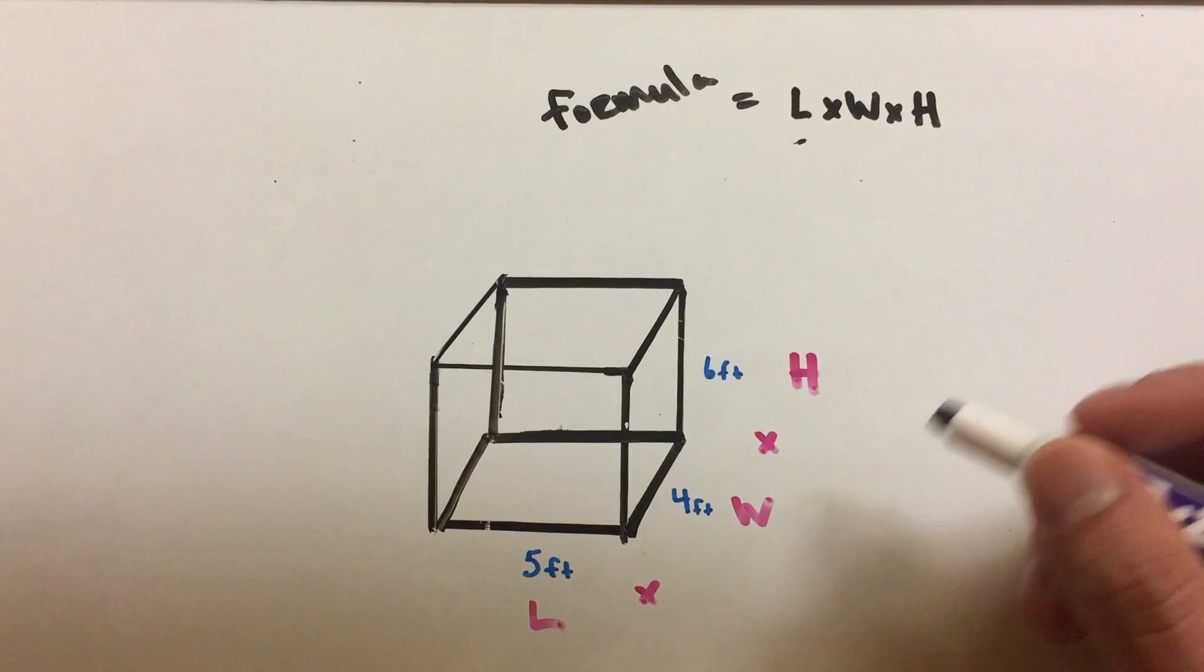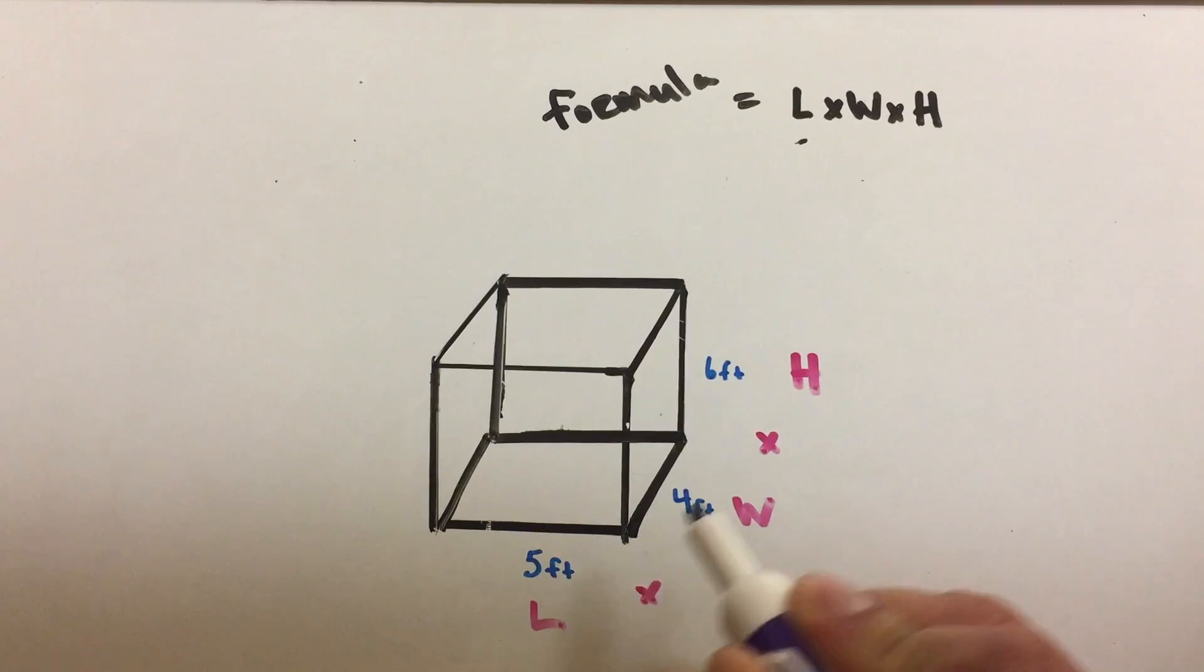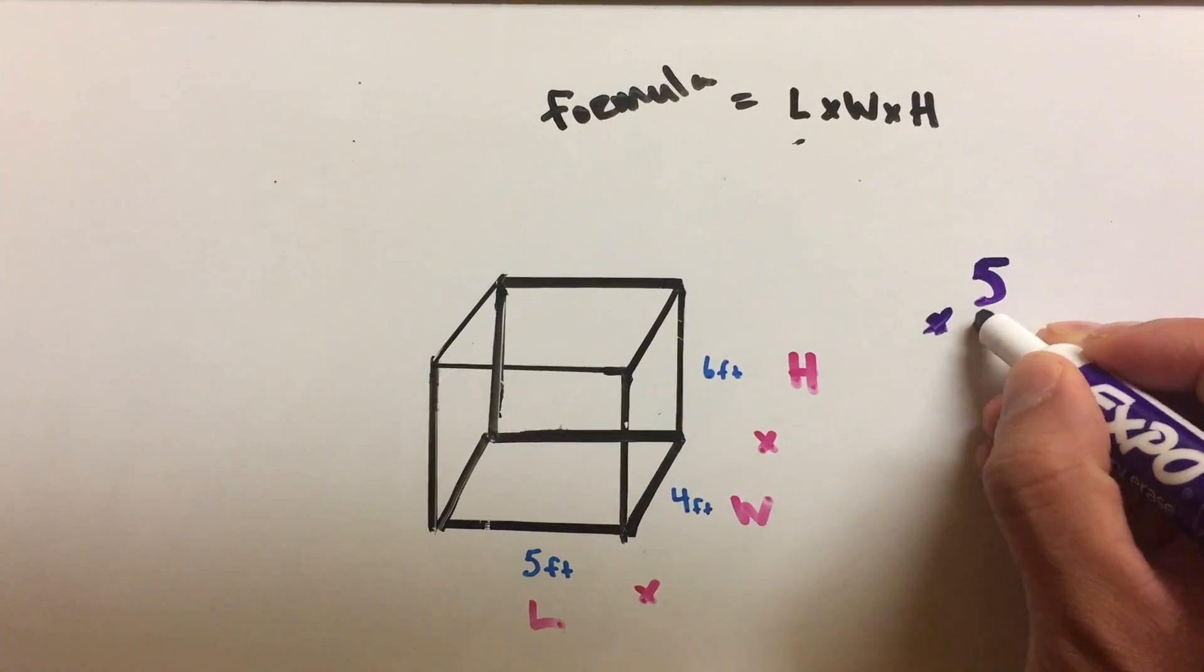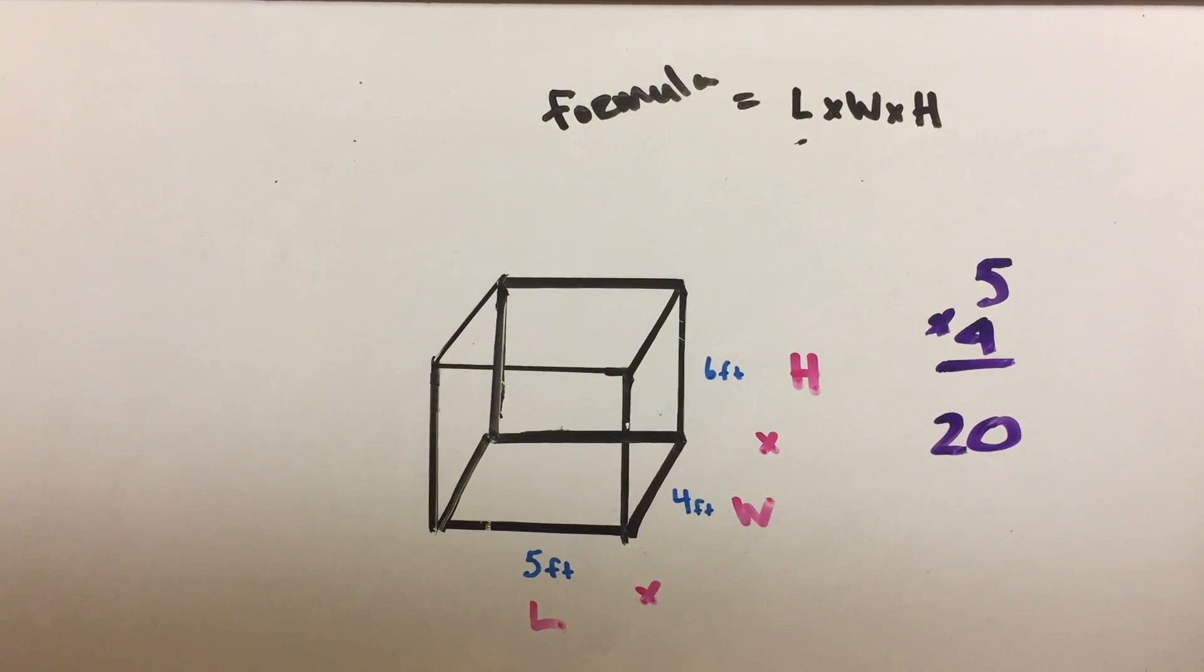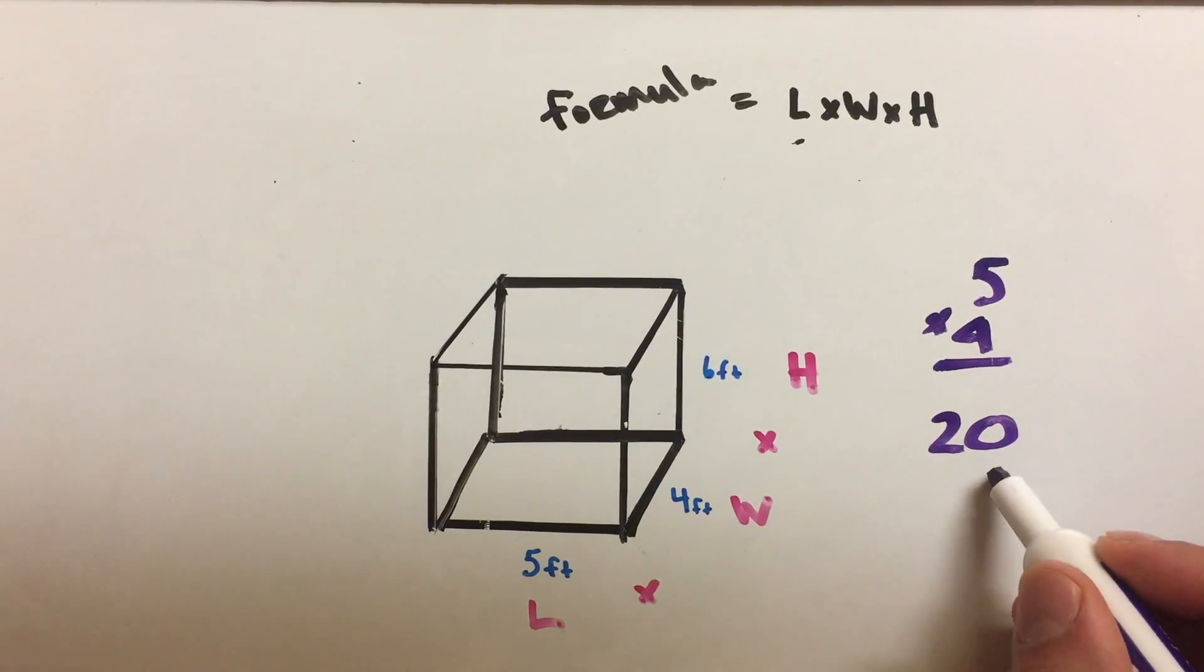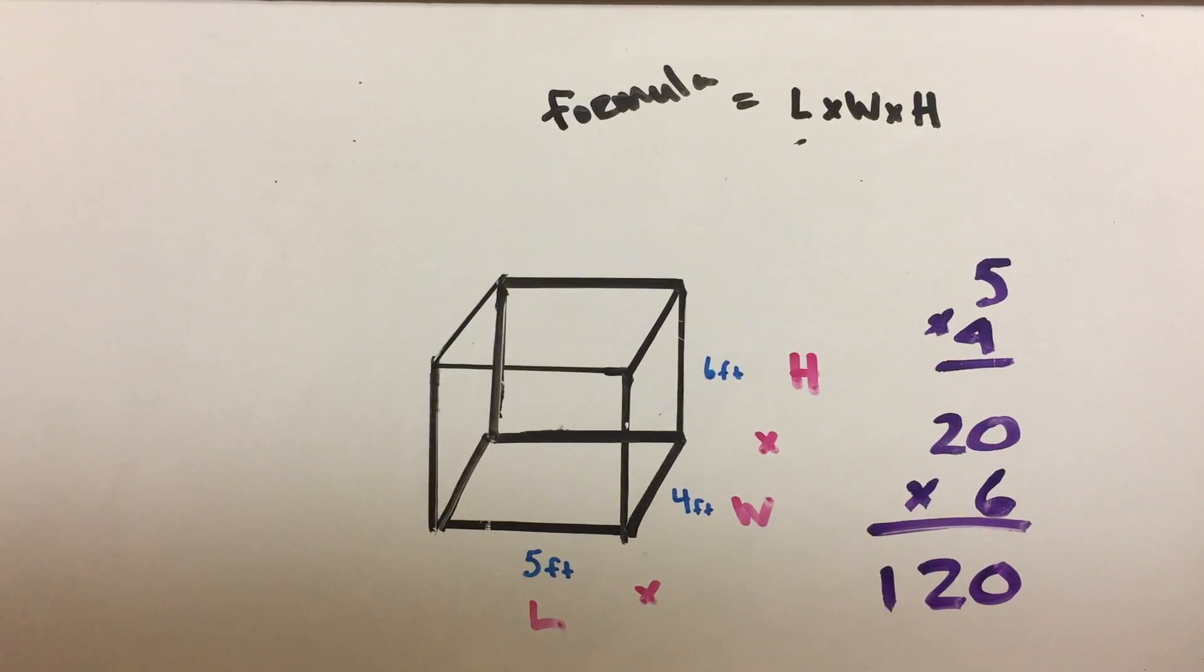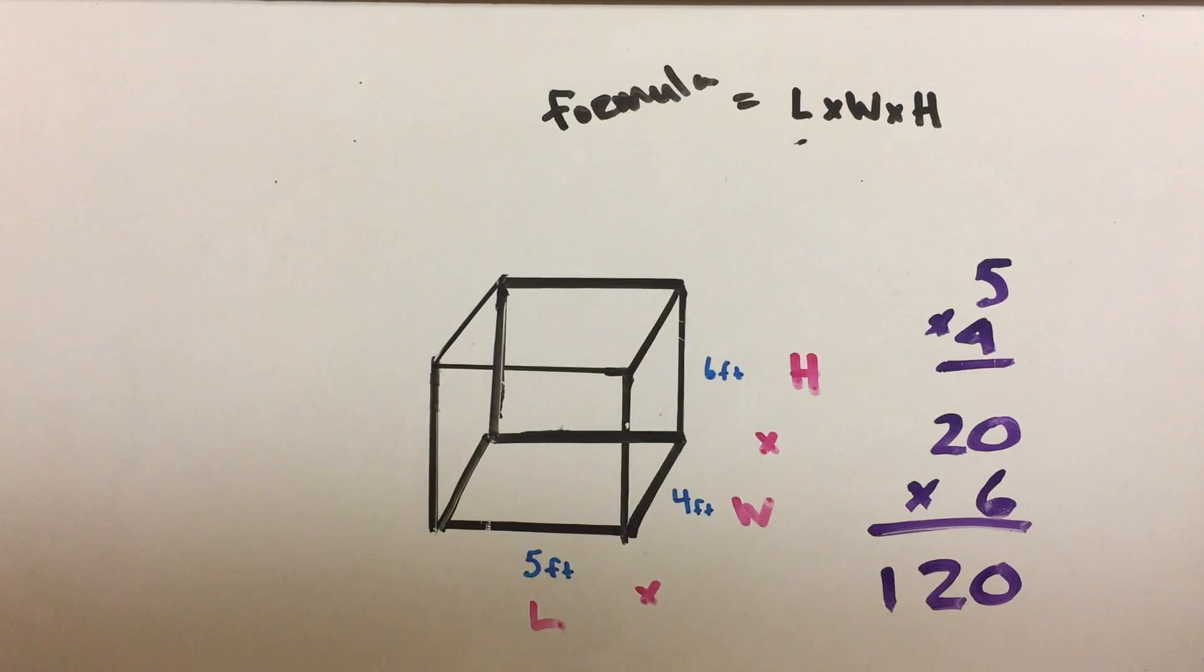So let's do that now. Here's the length times the width: five times four. Let's do that here. Five times four, we know that's 20. Okay, now that we have 20, we multiply these two. We still need the height: 20 times six. So let's put the six down there and multiply that. That looks like it's gonna be 120. So it looks like the volume of this rectangular prism here is gonna be 120.